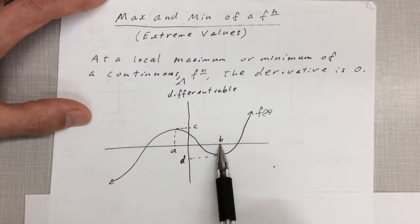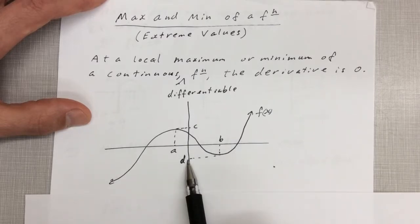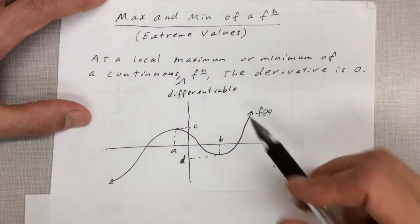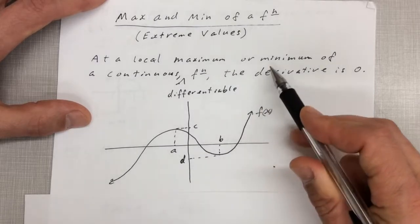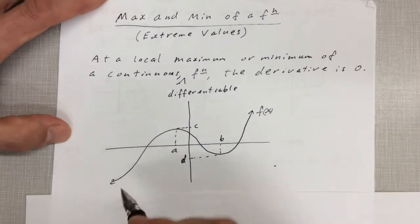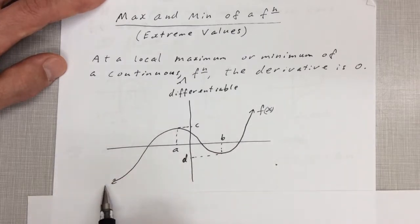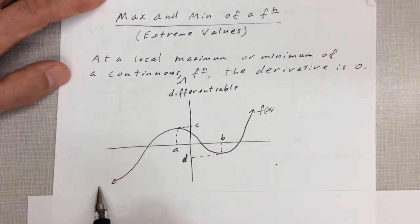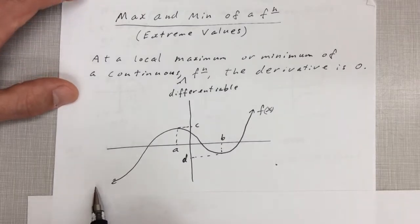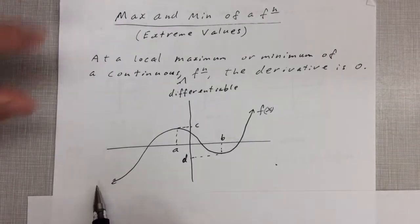At x equal to b, you have a local minimum, and the local minimum is d. But this function does not have an absolute maximum because it seems to go on forever, and it does not have an absolute minimum for the same reason. However, if this were to curl back up like a quartic, then there would be an absolute minimum somewhere.